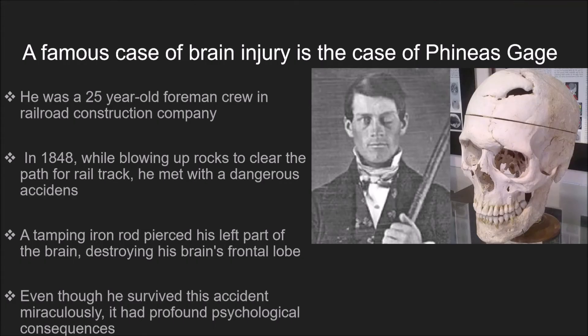Before we proceed, let us see a famous case of brain injury — the case of Phineas Gage. He was a 25-year-old foreman crew in a railroad construction company. In 1848, while blowing up rocks to clear the path for a rail track, he met with a dangerous accident. A tamping iron rod pierced the left part of his brain, destroying his brain's frontal lobe.